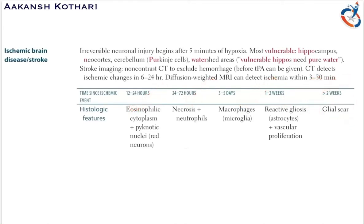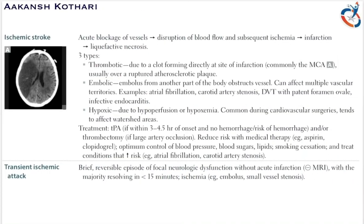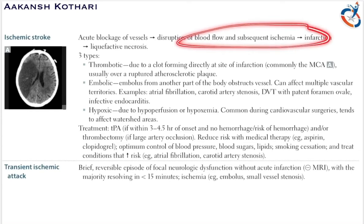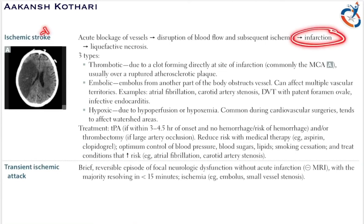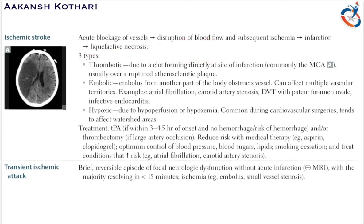To summarize: eosinophilic cytoplasm with karyolytic nuclei, then necrosis and neutrophils, then macrophages, then reactive gliosis plus vascular proliferation, and finally glial scar. Ischemic stroke is due to acute blockage of vessels leading to disruption of blood flow and subsequent ischemia, causing infarction. Because this occurs in the brain, it leads to liquefactive necrosis — unlike other organs which produce coagulative necrosis.